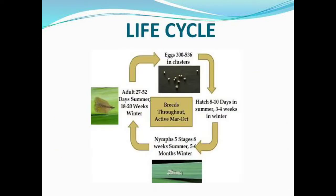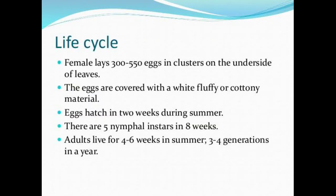If we talk about the life cycle, its life cycle includes adult, eggs, then eggs are converted into nymphs after metamorphosis and finally it becomes an adult. In the life cycle, the female lays eggs in a cluster — 300 to 500 eggs in a cluster.